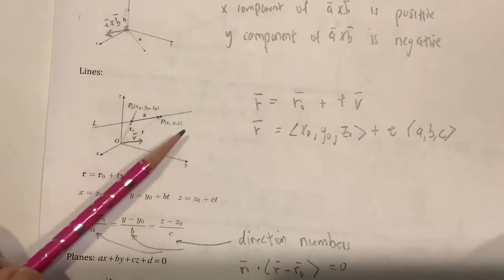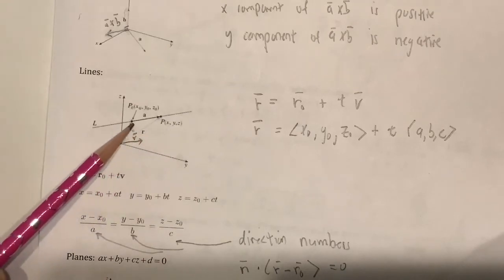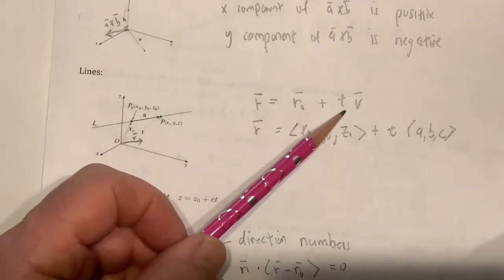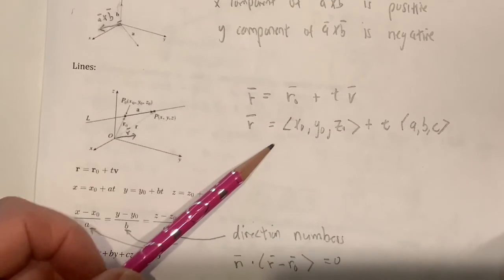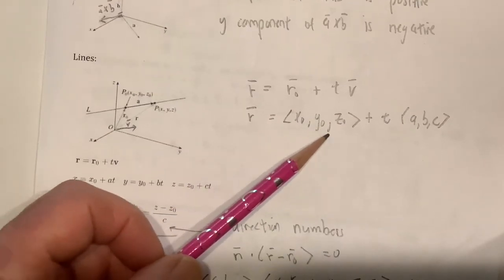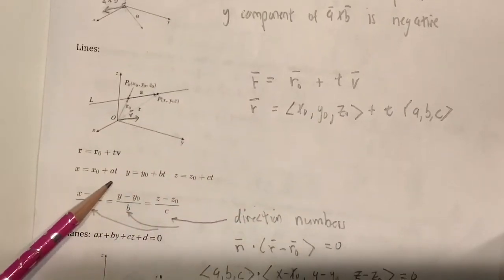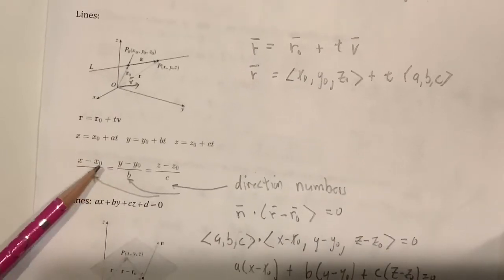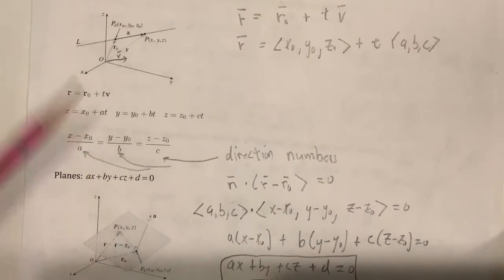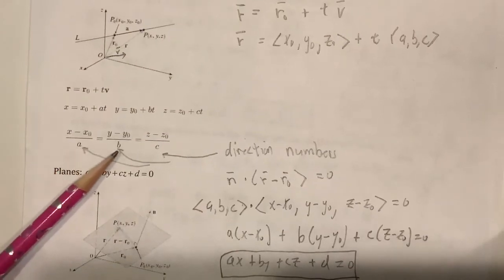it can be written as the vector sum of R naught plus t times the v vector. And if you look at the components of that vector, R, you get the parametric equations for the line. And if you solve for t, you get the symmetric form of the line. And the ABC are the direction numbers. Those are the components of the direction vector.